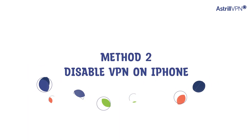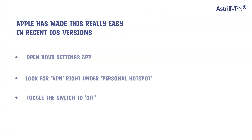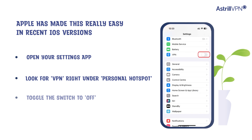Method 2: disable VPN on iPhone. For iPhone users, Apple has made this really easy in recent iOS versions. Here's what you do: open your Settings app, look for VPN right under Personal Hotspot, and toggle the switch to off.